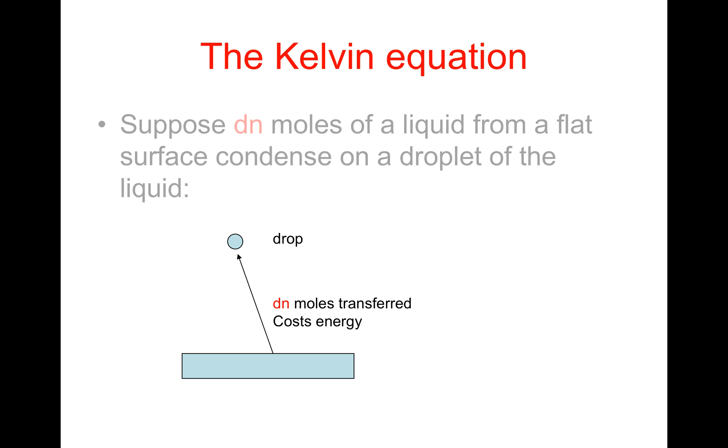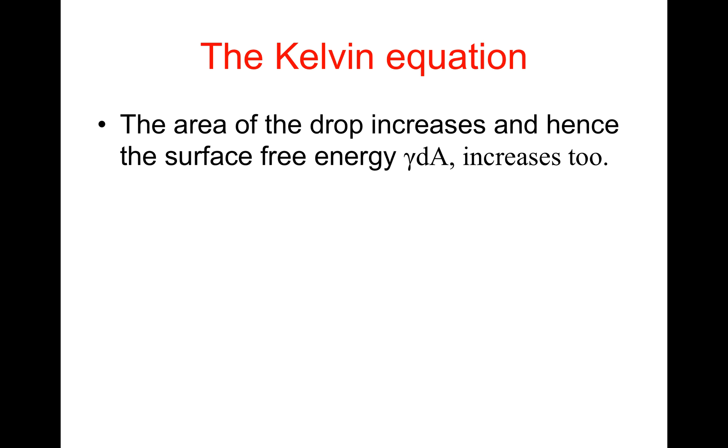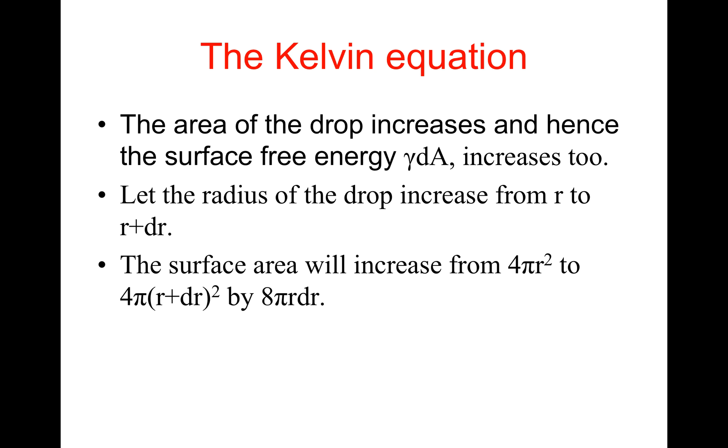The Kelvin equation. Suppose N moles of a liquid from a flat surface condense on a droplet of liquid, that is, the N moles are transferred to the droplet. This transfer costs energy. The area of the drop increases and hence the surface free energy γdA increases too. Let the radius of the drop increase from R to R plus dR. The surface area will increase from 4πR² to 4π(R + dR)², that is by 8πR dR. The surface free energy will increase by 8γπR dR.